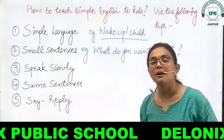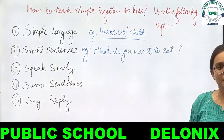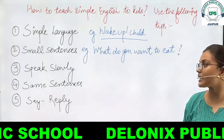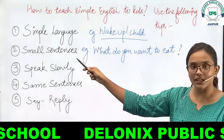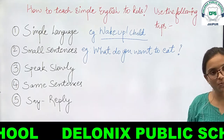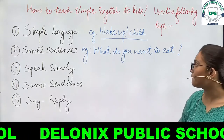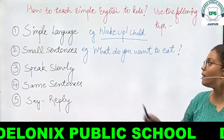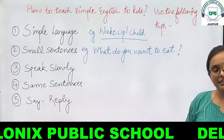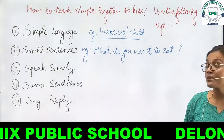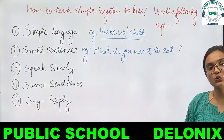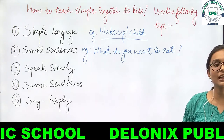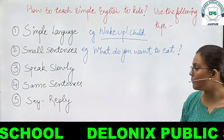Second tip is small sentences. Baccho ko kuch bhi seekhne ke liye chhoti-chhoti cheezon ka istamal karna padta hai. Isi tarah se, hamesha small sentences ka use karke baccho ko English bolna sikhana chahiye. For example, 'what do you want to eat?' — aapko kya khaana hai, ko hum 'what do you want to eat?' ka istemal karke use kar sakte hain. Baccha cheezon ko samjhega aur aapko respond bhi karega, aur woh bhi aapki tarah English ko learn karna seekhega.